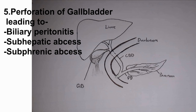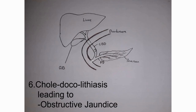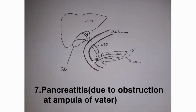The stone can also pass to the common bile duct causing an obstruction. When bile is obstructed, it can also block the pancreatic duct, leading to pancreatitis. So common bile duct obstruction can also cause pancreatitis.